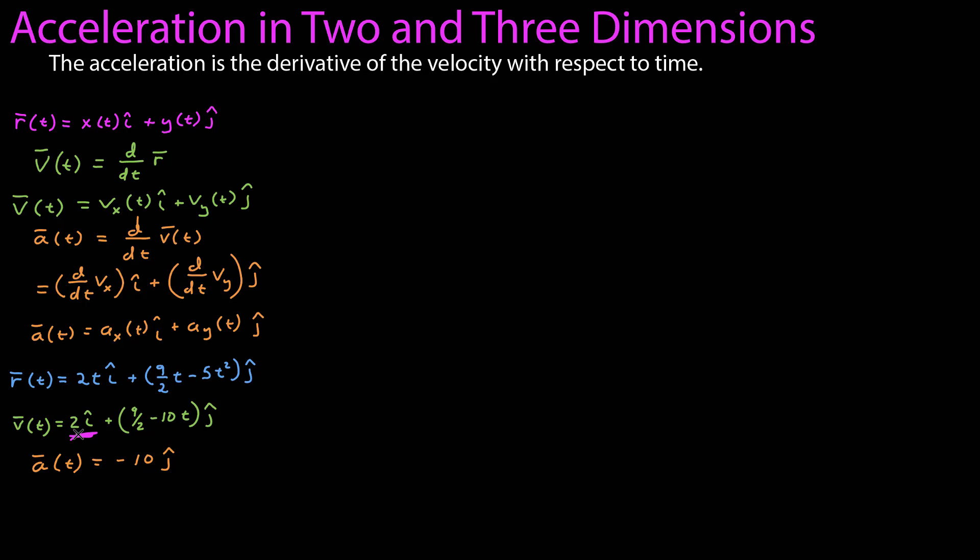The derivative of 2i-hat, both of those are constant, so the derivative of a constant is zero. The derivative of 9 halves is also zero. The derivative of negative 10t is just negative 10, and that gives us the acceleration.